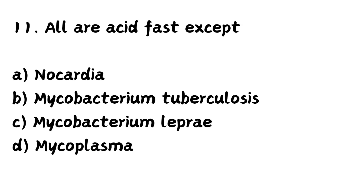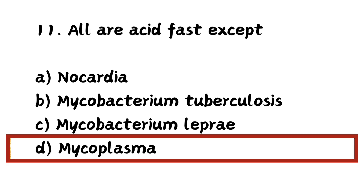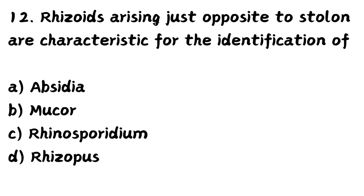Next question: All are acid fast except — Option A: Nocardia, Option B: Mycobacterium tuberculosis, Option C: Mycobacterium leprae, Option D: Mycoplasma. The right answer is Option D — Mycoplasma. Mycoplasma is devoid of a cell wall, so it is not an acid fast bacterium.